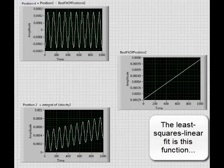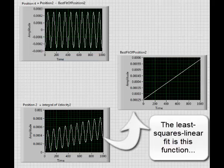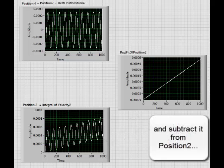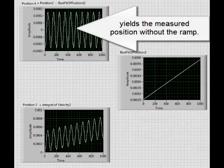The least squares linear fit is this function. Subtracting it from position 2 yields the measured position without the ramp.